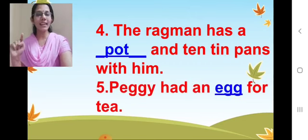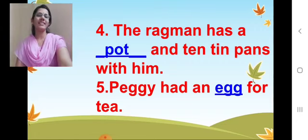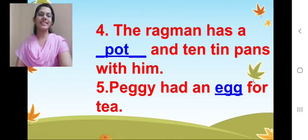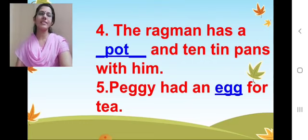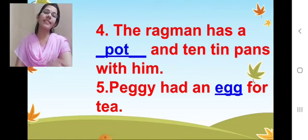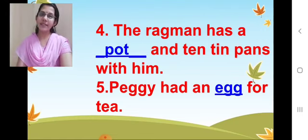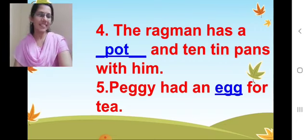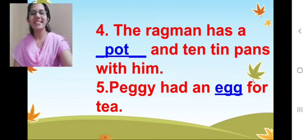Fifth one. 'Peggy had an ___ for tea.' Egg — forty. Nice. Fifth one: 'Peggy had an egg for tea.' What is the spelling of egg? E-G-G. Very nice. So write E-G-G on fifth one. And after writing the answer, just read that sentence. 'Peggy had an egg for tea.' Correct sentence? Very nice.